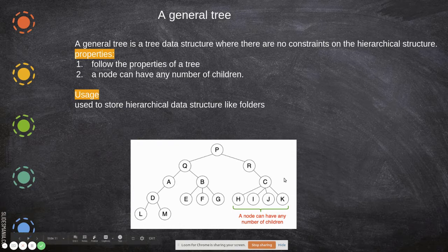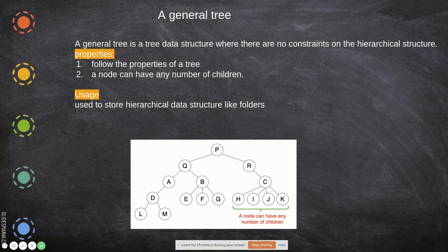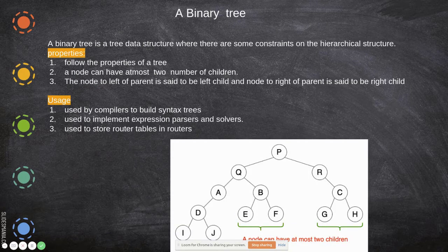A general tree is used to store hierarchical data. For example, when you create a folder and within that folder you create many sub-folders, then in another folder you create more folders and arrange your data accordingly — that is a good example of a general tree structure.